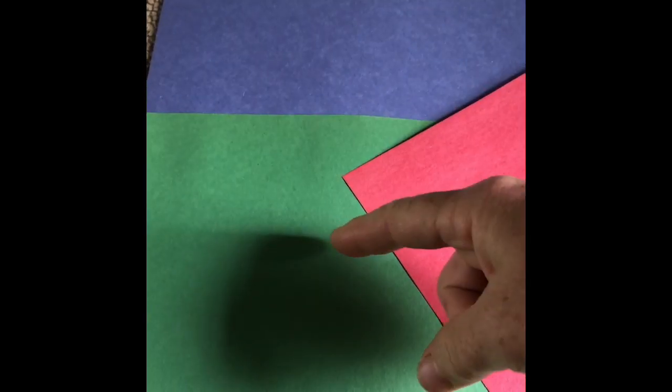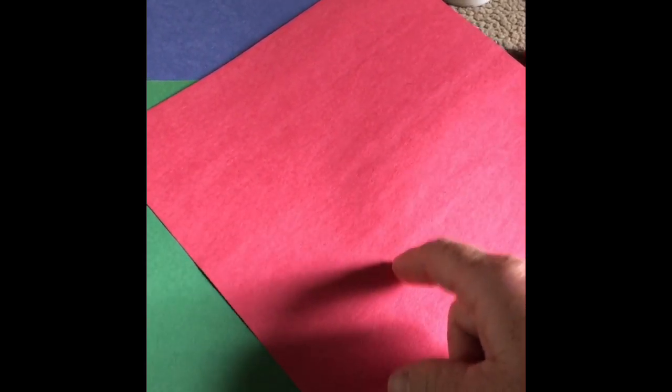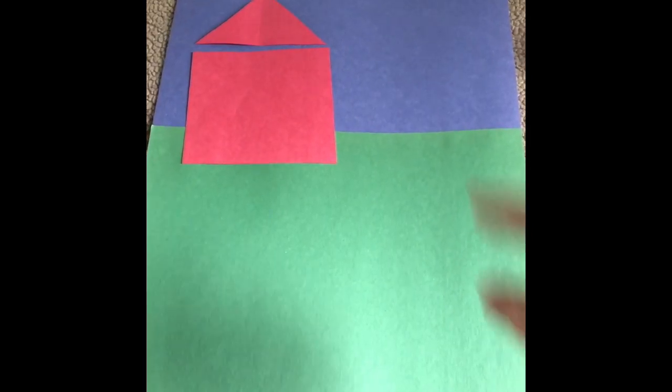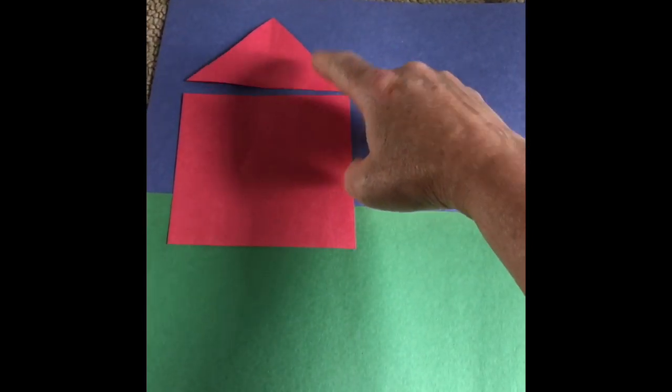I glued these two pieces together and I'm going to cut out a square of red and a triangle for the barn. Here's the barn. It's a square, you can see on the paper, and there's a triangle on top. You can make it any size you want to.